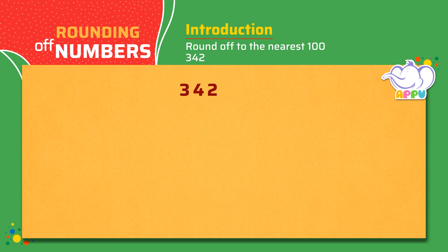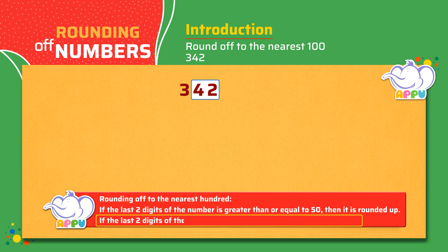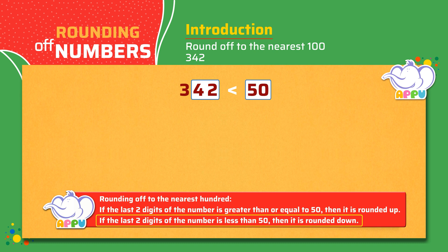342. Here 42 is less than 50. 342 rounded to the nearest 100 is 300.